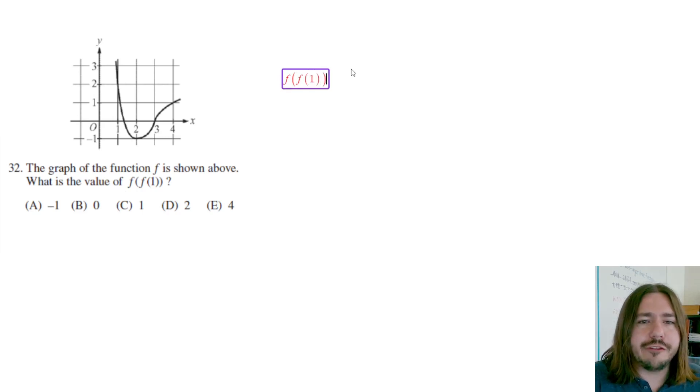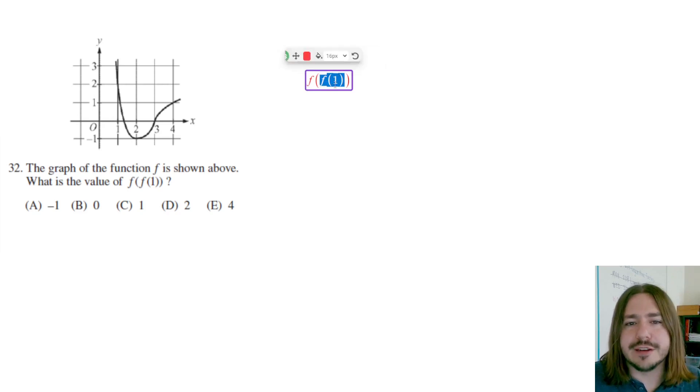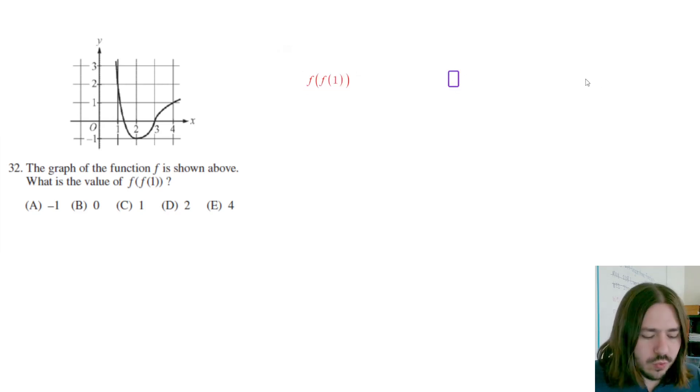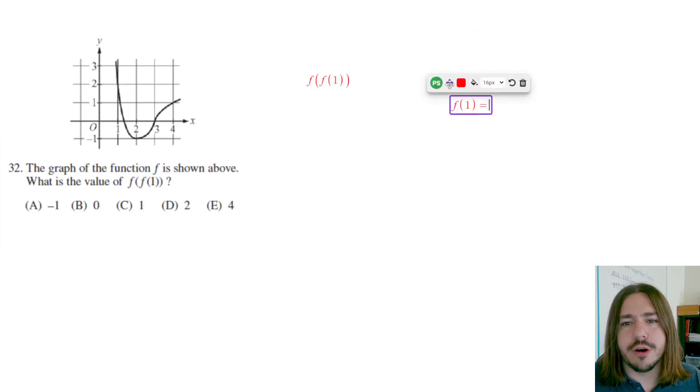So to evaluate f of f of 1, you're going to evaluate this from the inside out. So first we're going to evaluate f of 1, and then whatever that equals, we're going to evaluate f of that. So when you have this function notation and you have f of something, that's always going to equal y. So f of x typically equals just y. And so when I want to know what is f of 1, for instance, what I'm looking for is the y-coordinate of the function when x is 1.